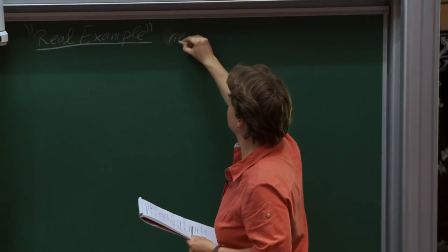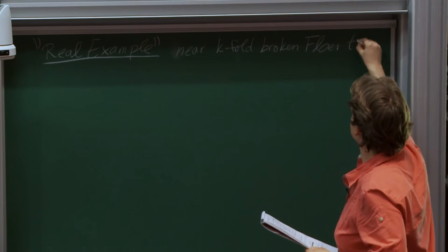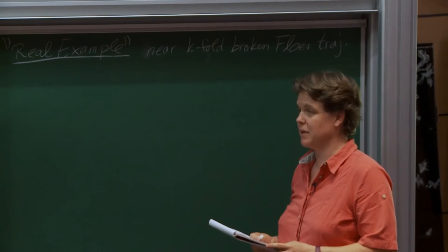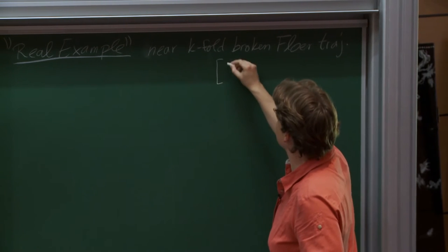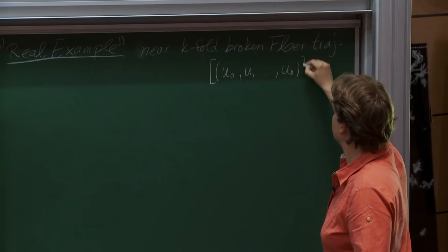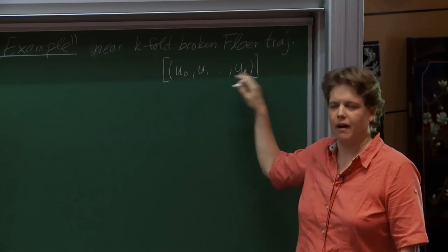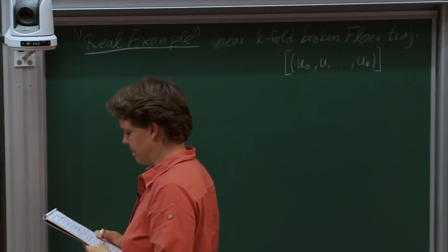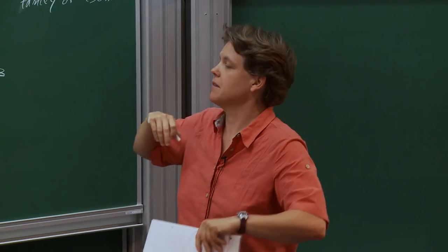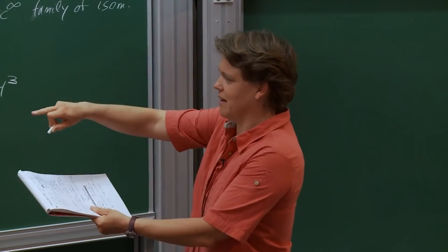The real example: I want to think about the bundle near a k-fold broken Floer trajectory, which is the same as a k+1 Floer building. I'm being sloppy in that Floer trajectories need to be modded out by R. The gluing parameters correspond to the height of the building: for every floor, when I glue together, I need one gluing parameter. So k is n there. Each actual floor breaking gives boundary, while internal nodes just give other parameters.